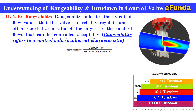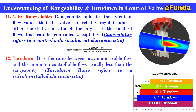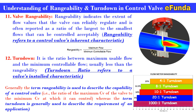A typical commercial valve generally has a rangeability of about 35 to 50. Now, turndown: it is the ratio between maximum usable flow and minimum controllable flow, and is usually less than the rangeability. Turndown ratio refers to the valve's installed characteristic, while rangeability is used to describe the inherent capability of a control valve. The turndown is the ratio of maximum Cv to the minimum Cv at which the valve can control, and the term turndown is generally used to describe the requirement of an application.